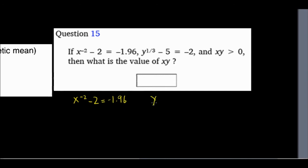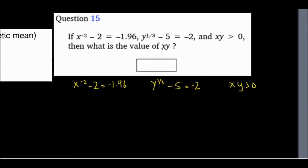Then I have y to the one third minus 5 equals negative 2. And then I have one condition that x, y product has to be positive. And then they're asking you to find the value of xy.